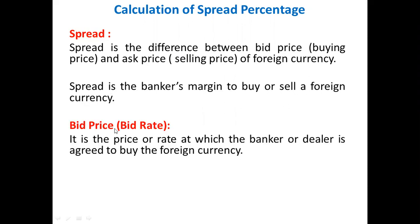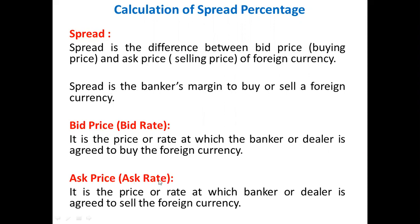Bid price or bid rate is the price or rate at which the banker or dealer agrees to buy the foreign currency — that is called the bid price or bid rate. Ask price or ask rate means it is the price or rate at which the banker or dealer agrees to sell the foreign currency — that rate or price we call the ask rate or ask price.